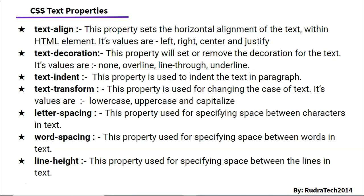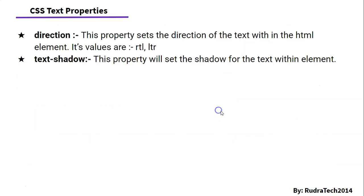Then is the line-height property. If you want to add space between letters, we have letter-spacing. If you want to add space between words, we have word-spacing. Similarly, the line-height property will create space between the lines within the paragraph or within the HTML elements. Then there is a direction property. This property is very useful for displaying text written left to right or right to left — for example, Arabic or Urdu text is written right to left, whereas English, Hindi, or Marathi text is written left to right. Then there is a text-shadow property, which is used to add shadow to your given text.